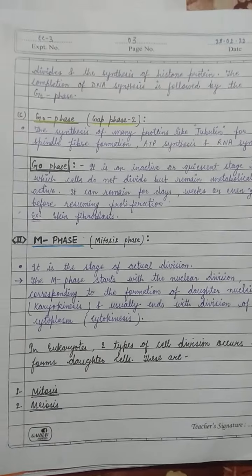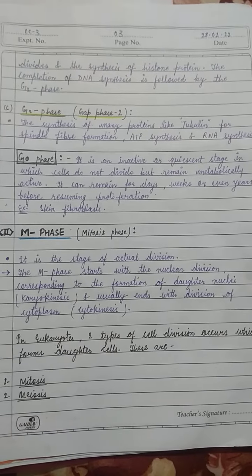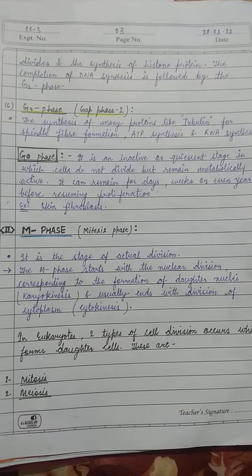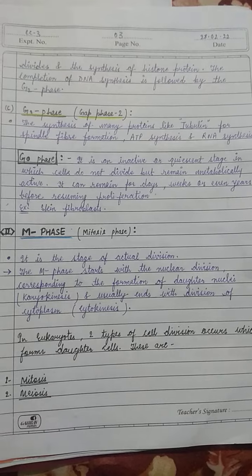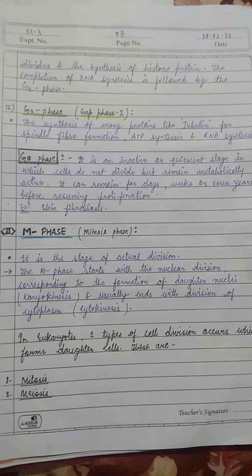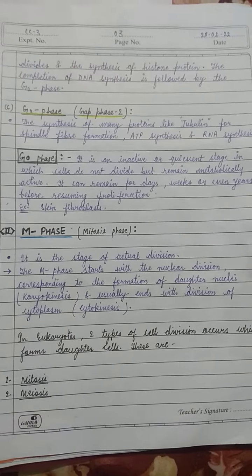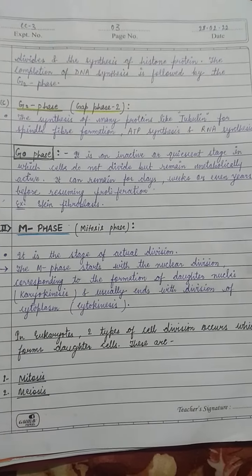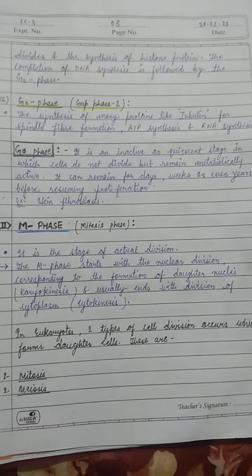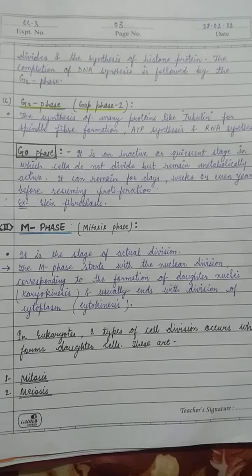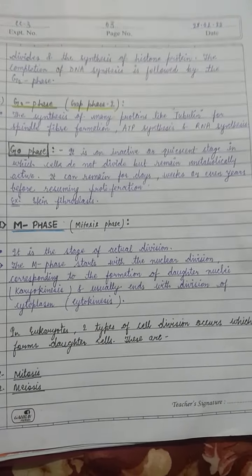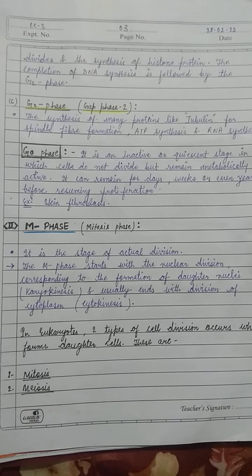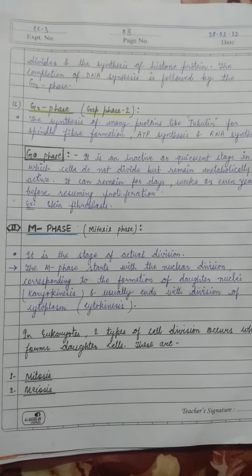There is also the G0 phase, called the inactive or quiescent stage, in which cells don't divide and go into a resting stage. It is metabolically active but functionally inactive. Cells can remain in G0 for days, weeks, or even a year before resuming proliferation.